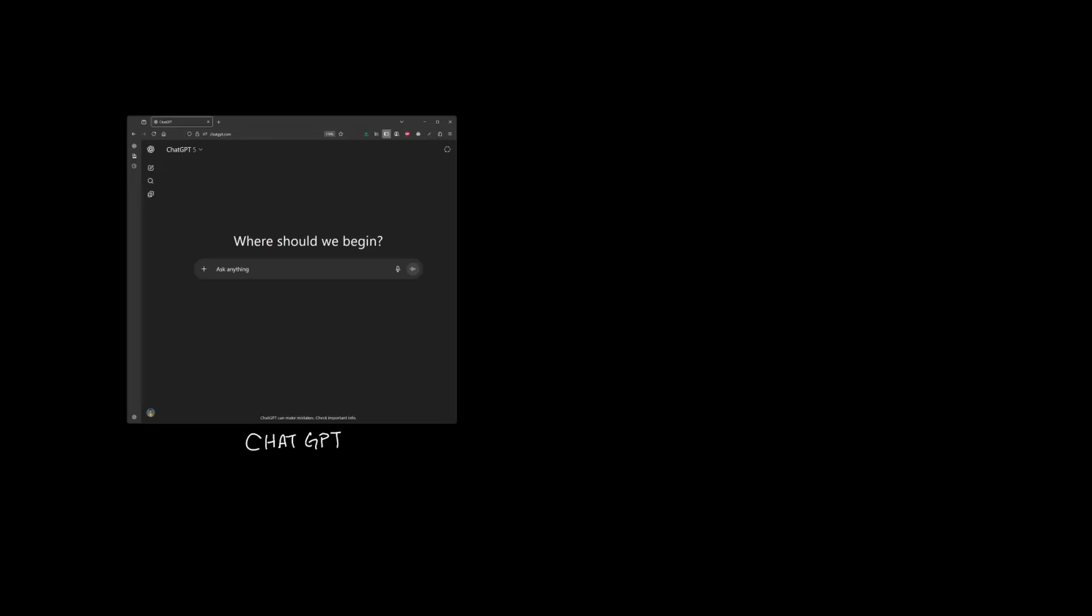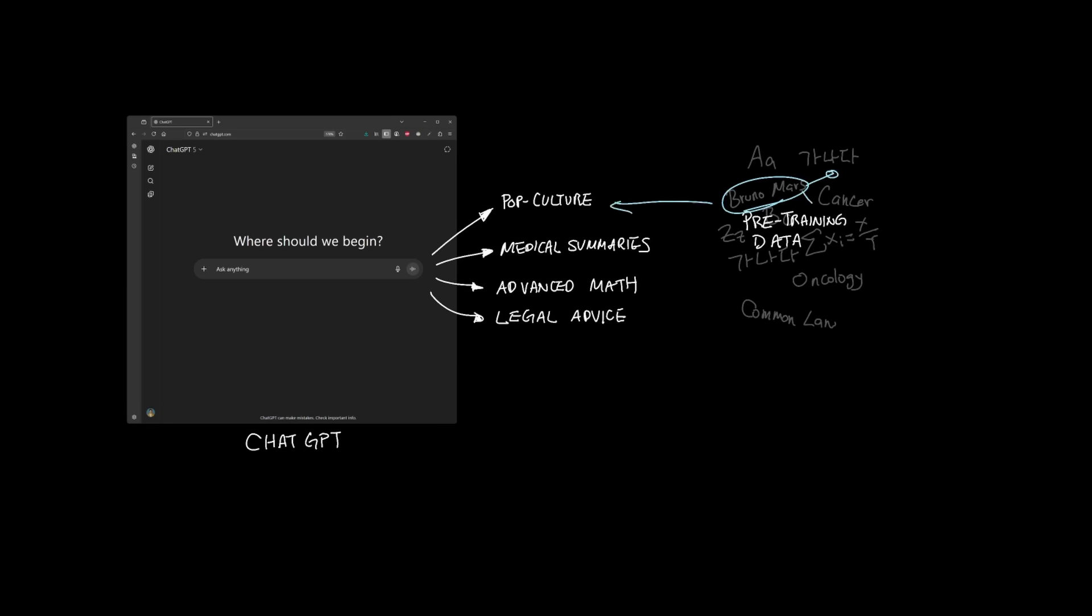For instance, models that we use in ChatGPT, for example, we can ask about pop culture, medical summaries, advanced mathematics, or even legal advice because in the trillions of data that it was fed into the model during pre-training, probably included related examples that the model can learn via transfer.